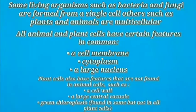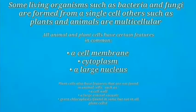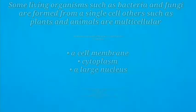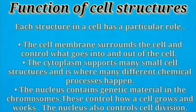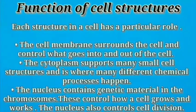Each cell structure has its own function. A cell membrane controls substances from entering and leaving the cell. Cytoplasm is a jelly-like substance where many small cell structures are found and where many chemical processes happen. The nucleus controls the cell division and also controls the growth and the work of the cell.